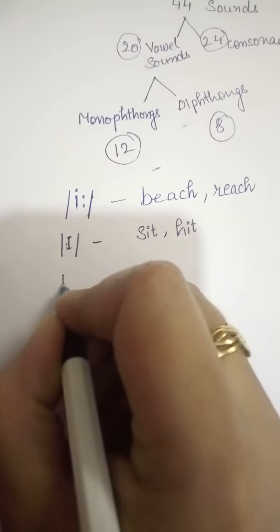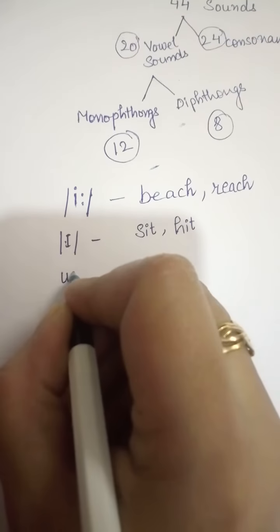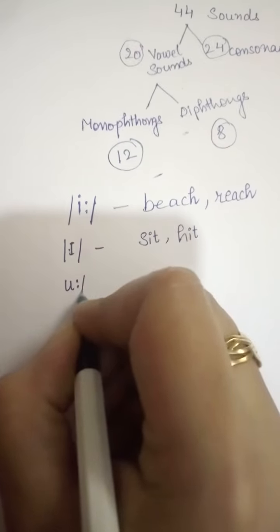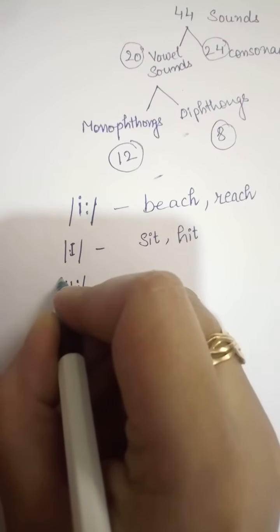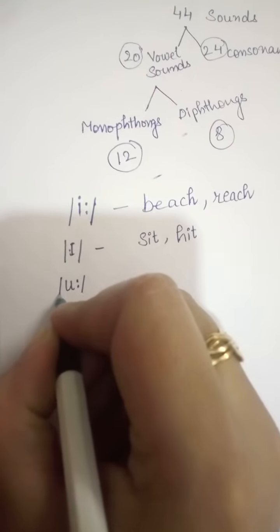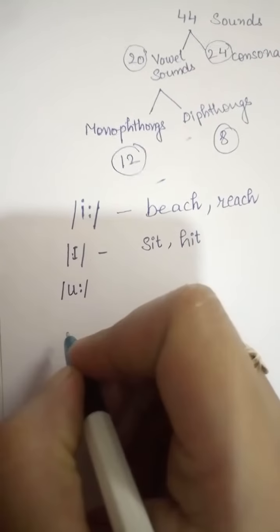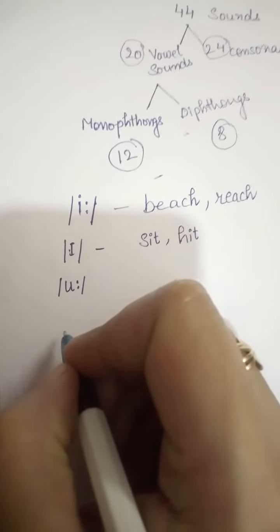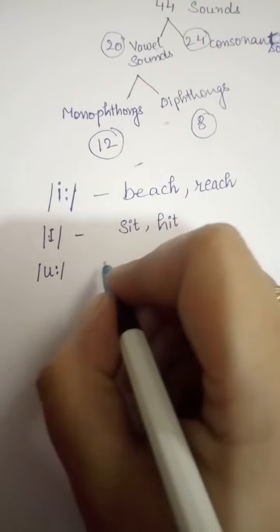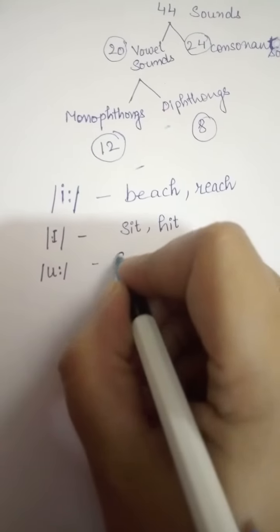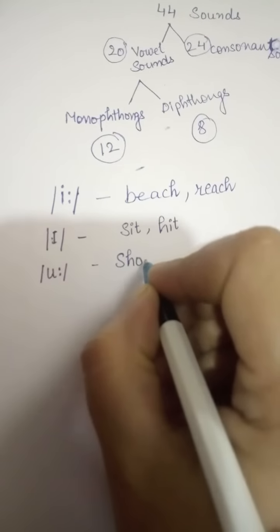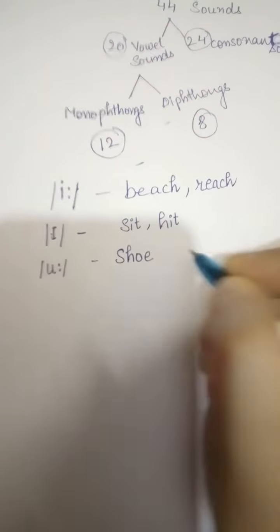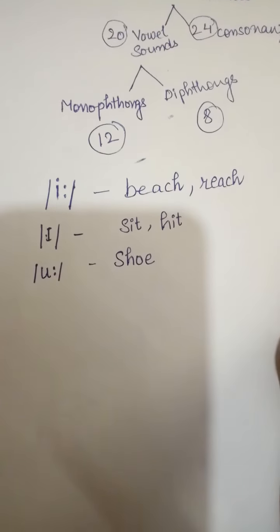The next monophthong is the long 'oo' sound, as in 'shoe.'